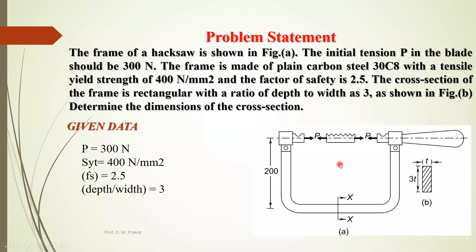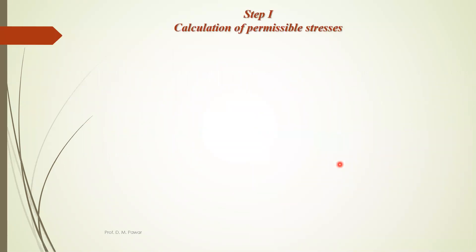Step 1 is the calculation of permissible stresses. In every design process we need to find out permissible stresses first. Permissible tensile stress is nothing but SYT divided by factor of safety. SYT is 400 and factor of safety is 2.5, so allowable tensile stress is 400 divided by 2.5, which equals 160 Newton per mm square.